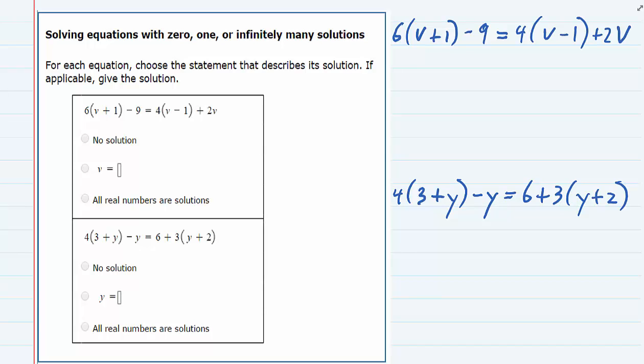For this problem, we're asked to solve a couple of equations, but we have some different options for what kind of solutions we're going to be getting. The instructions say we may have zero solutions, none. We may have one solution or infinitely many solutions. So we have a couple of different possibilities.